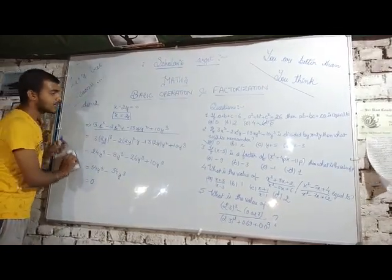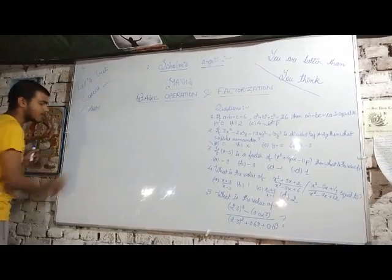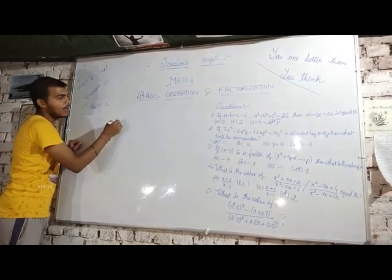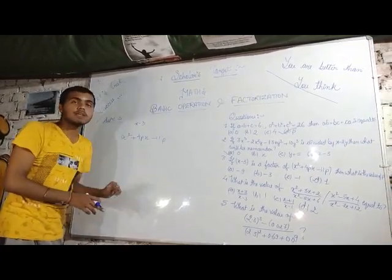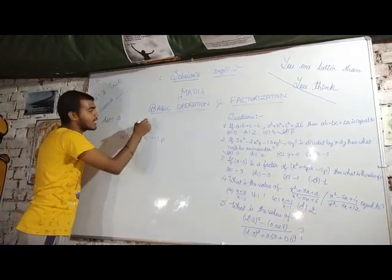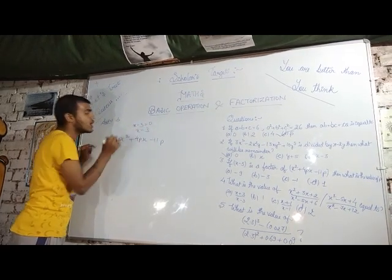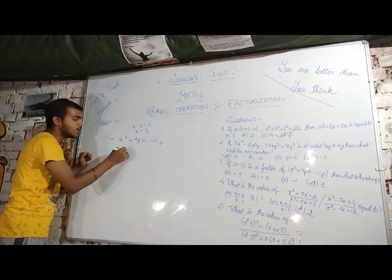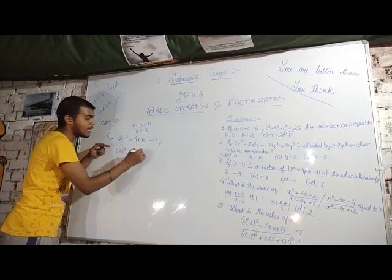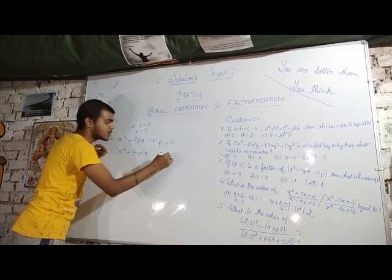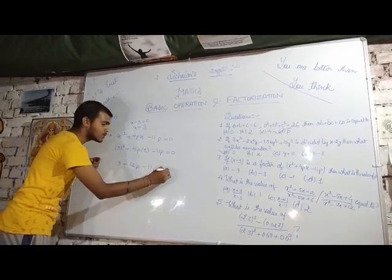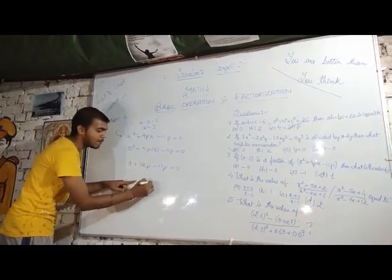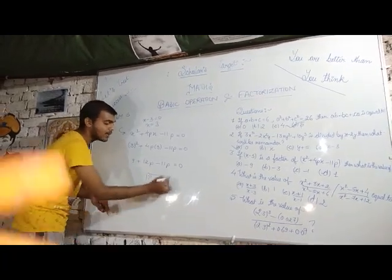Solution number 3: If x - 3 is a factor of x² + 4px - 11p, find p. Since x - 3 is the given factor, using the same trick as the previous question: x - 3 = 0, so x = 3. Put x = 3 into the equation: 9 + 4p(3) - 11p = 0, which gives 9 + 12p - 11p = 0, so 9 + p = 0, therefore p = -9.